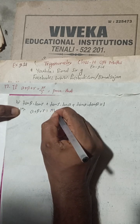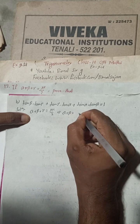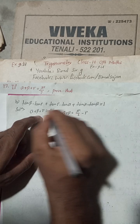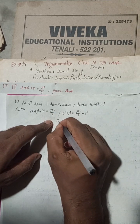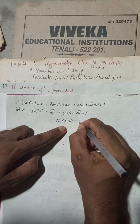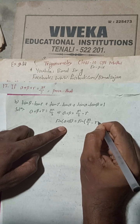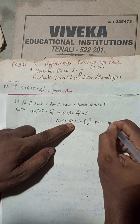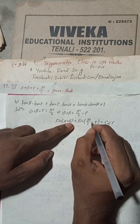Here is the given condition: alpha plus beta plus gamma equals pi by 2. This implies alpha plus beta equals pi by 2 minus gamma. Now when you take sin of both sides, sin(alpha plus beta) equals sin(pi/2 minus gamma), and since pi/2 is 90 degrees, this becomes cos gamma, which is positive and in the first quadrant.